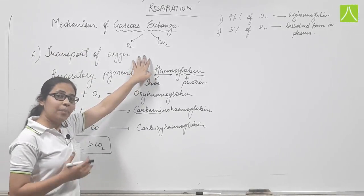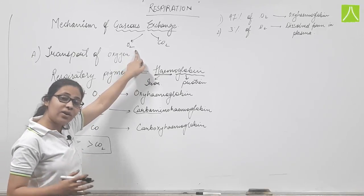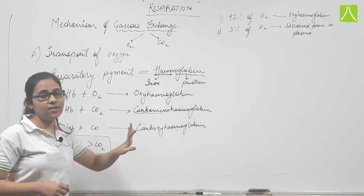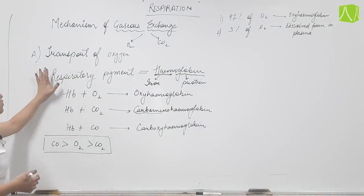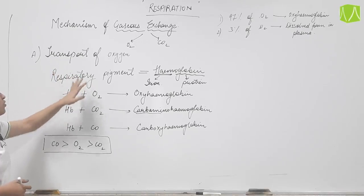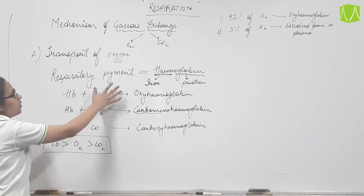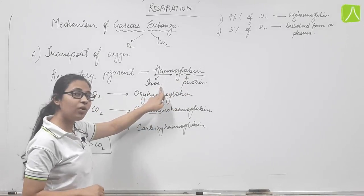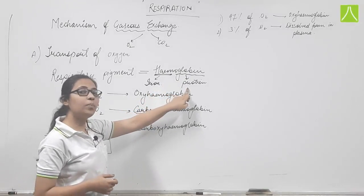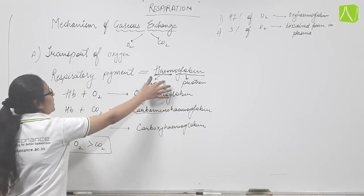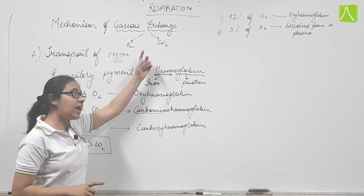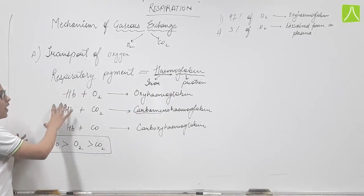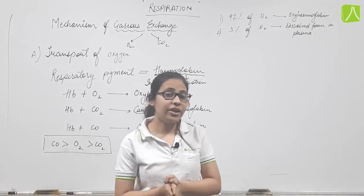We will look at how oxygen is carried away from the lungs to the target site or tissues, and how CO2 is carried from the tissues back to the lungs. First, we take up the transportation of oxygen. In our RBC we have a respiratory pigment called hemoglobin, which is made up of two components — iron (heme stands for iron) as the central part, surrounded by a protein chain.